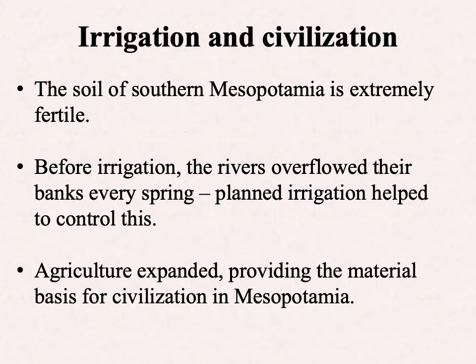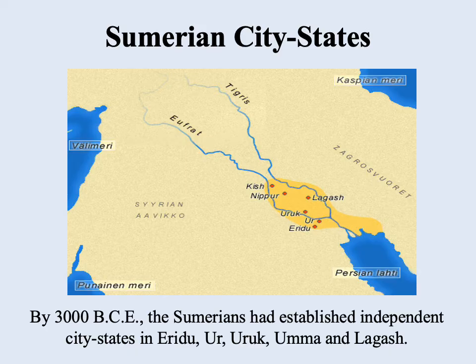In the case of Mesopotamia, the earliest civilizations developed in the south, where the soil is very fertile partly because the Tigris and Euphrates rivers deposit a lot of silt there. But the rivers are also very unpredictable — they overflow a lot, especially in spring — making it very difficult to develop large-scale agriculture unless you can control them. This led to highly developed irrigation systems, which may be part of why more complex civilization emerged there. Agriculture greatly expanded, providing the material basis for civilization in Mesopotamia, and the earliest civilization took the form of city-states.